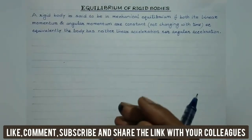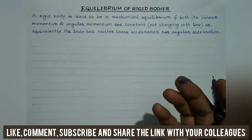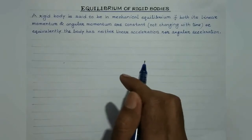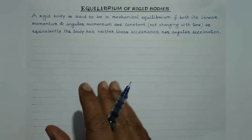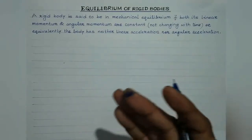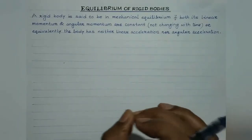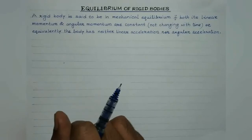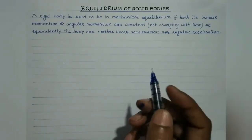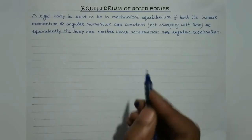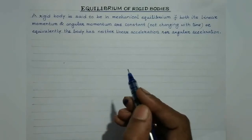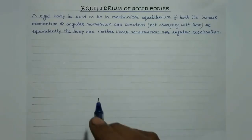A rigid body, such as a chair, a bridge, or even a building, is said to be in equilibrium if both its linear momentum and its rotational analog — that is, angular momentum — have a constant value. When a rigid body is in equilibrium, the linear acceleration of its center of mass is zero, and the angular acceleration about any fixed axis is also zero.